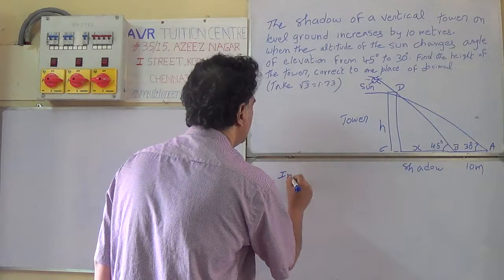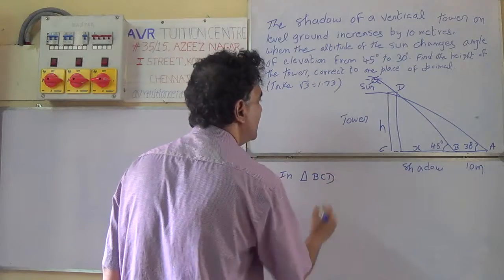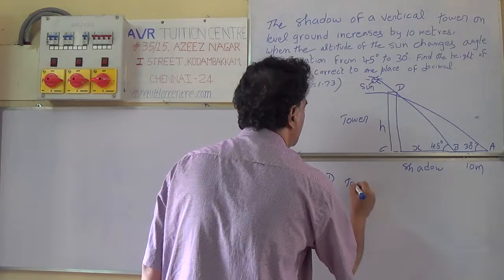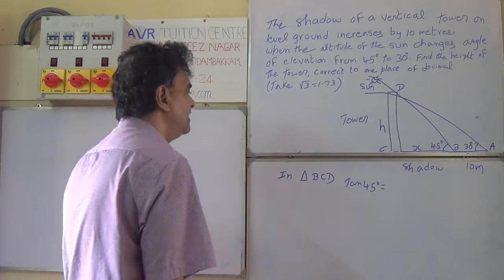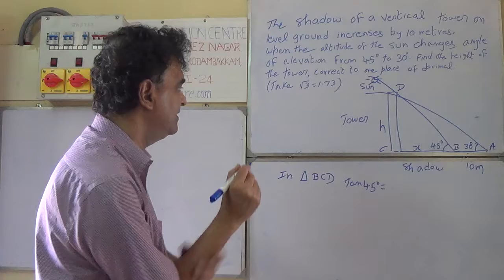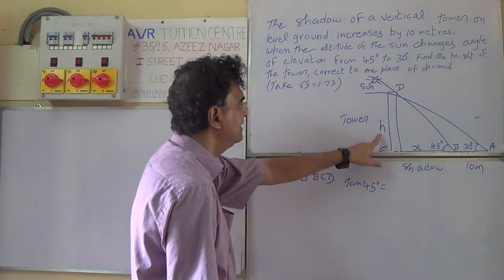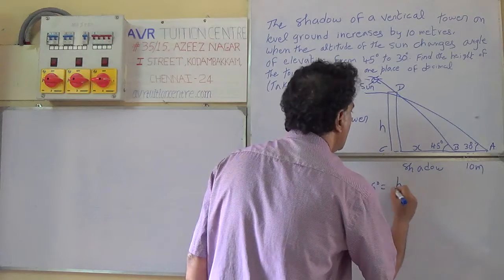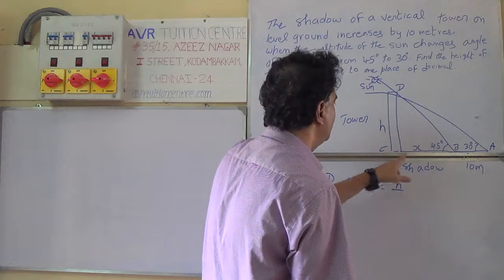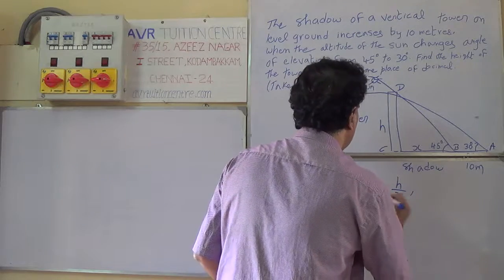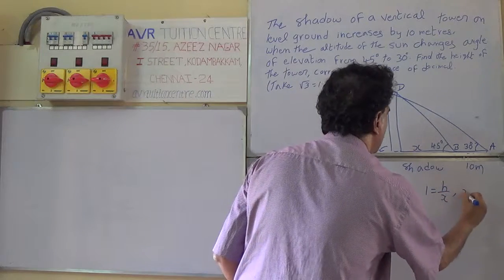In right triangle BCD, tan 45 degrees equals opposite over adjacent. The opposite side is H, and the adjacent side to this 45 degree angle is X. So tan 45 = H by X. Since tan 45 equals 1, we get X equals H.